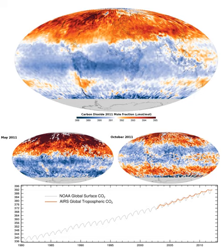The global mean CO2 concentration is currently rising at a rate of approximately 2 ppm per year and accelerating. There is an annual fluctuation of about 3–9 ppm which is negatively correlated with the Northern Hemisphere's growing season. The Northern Hemisphere dominates the annual cycle of CO2 concentration because it has much greater land area and plant biomass than the Southern Hemisphere.